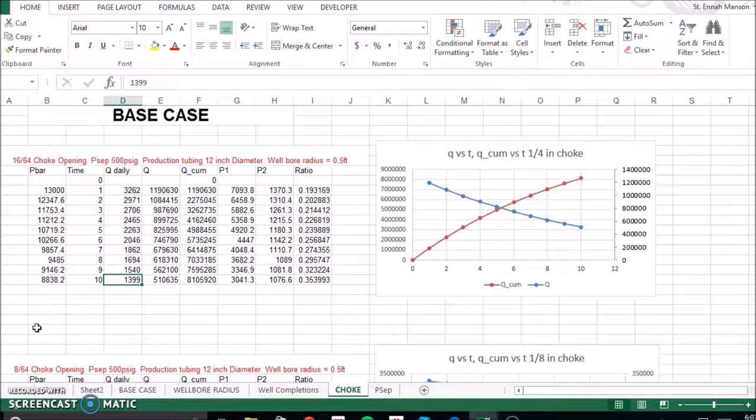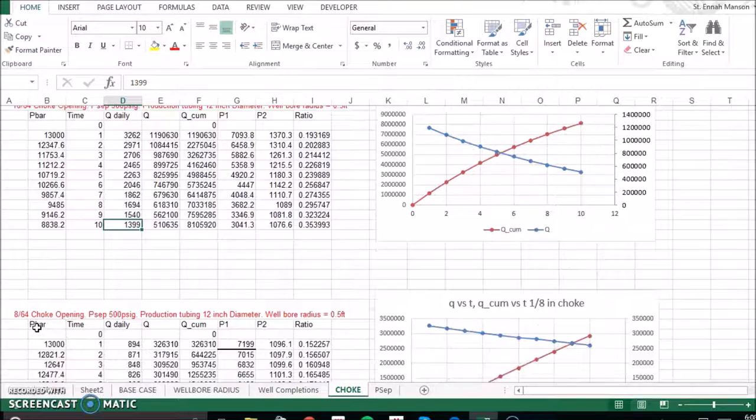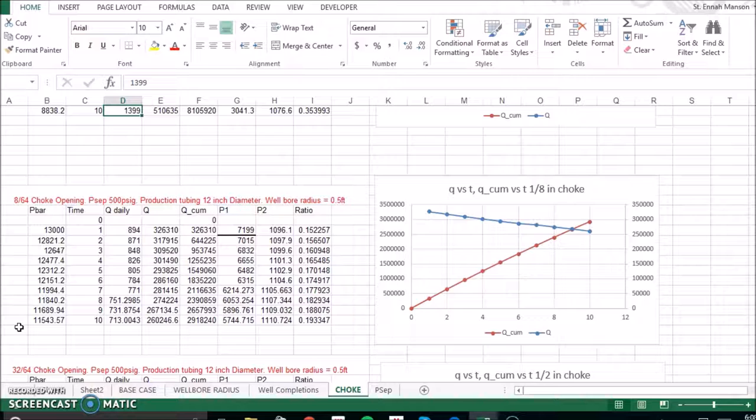What that means is that our ratio of P2 over P1 had to be less than 0.7. So we chose one fourth of an inch because that was the maximum production that we could get while obtaining 10 years of critical flow. When we decreased our choke opening size to one eighth of an inch, we also obtained 10 years of critical flow, but our production decreased.